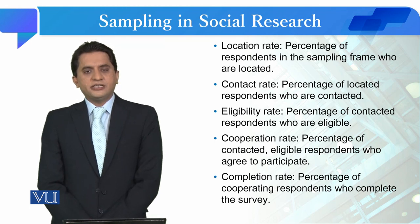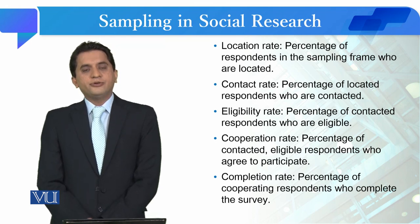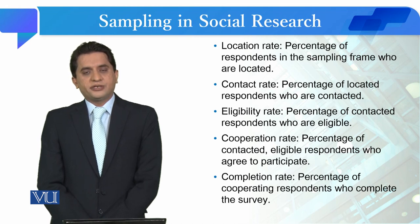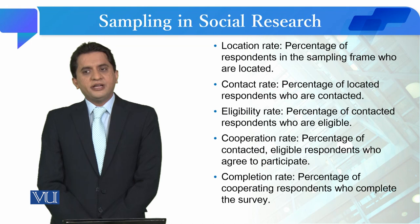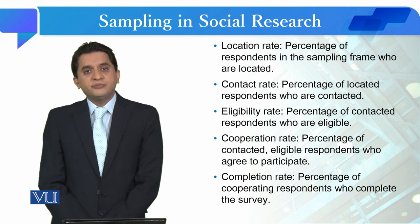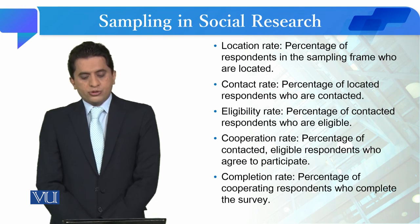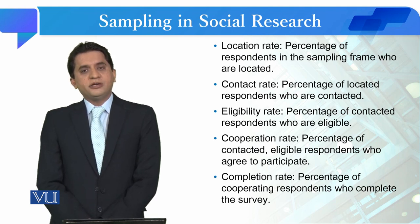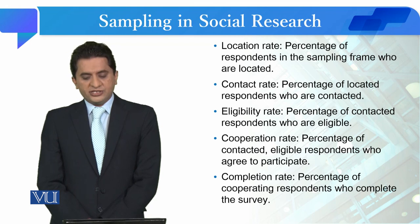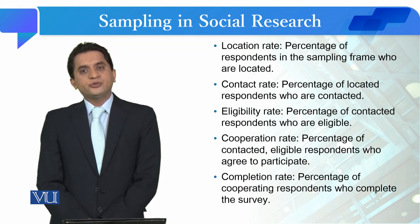After contacting the people, you have to decide about the eligibility of the respondents whom you have contacted, on the basis of your inclusion and exclusion criteria of the sampling. So the eligibility rate is the percentage of contacted respondents who are eligible.